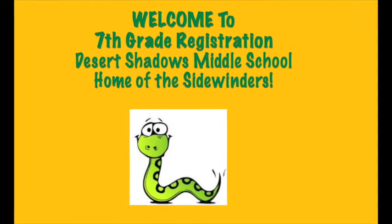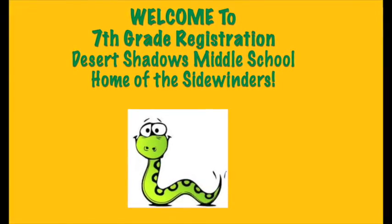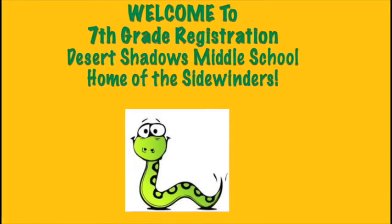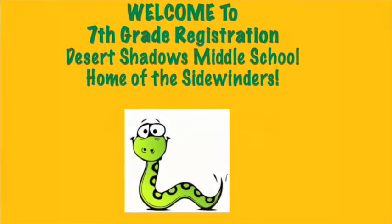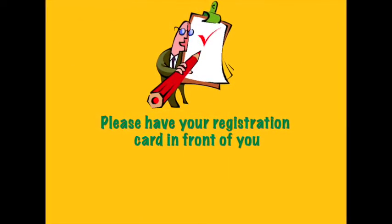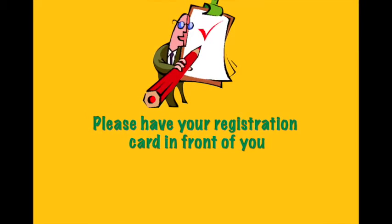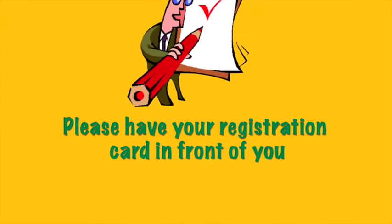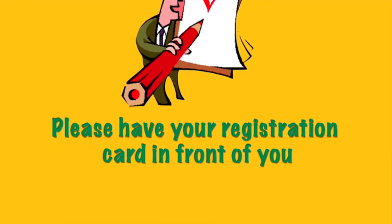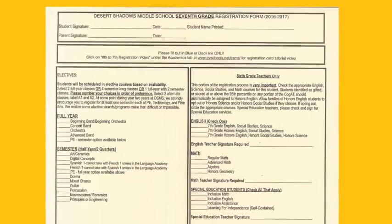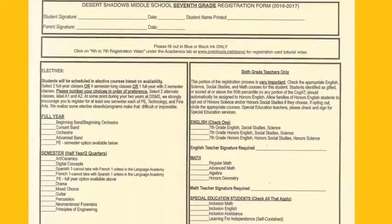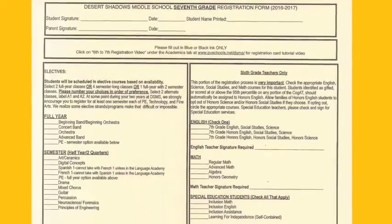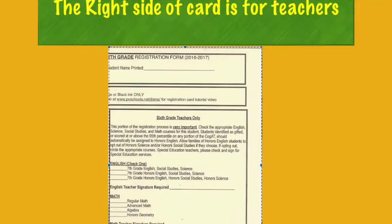Please note, if you have been admitted into one of Desert Shadows Middle School's academies, your card will be a different color. Please have your card in front of you as we explain the steps for filling it out. As you look at the card, please notice at the top it says: please fill out in blue or black ink only. Please be sure to use a blue or a black pen.